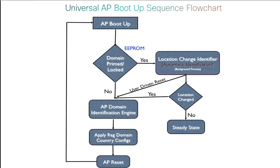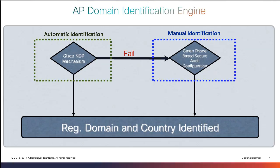When a universal access point boots up, it looks into its configuration to check if the country has been provisioned. If it hasn't, it's going to listen to the air and check if other access points around may have country information to provide. If they do, the AP is going to dynamically get its own country code value from the neighboring access point. If no access point around can provision country information, then the AP is going to join the controller and wait for you to dynamically provision the country.